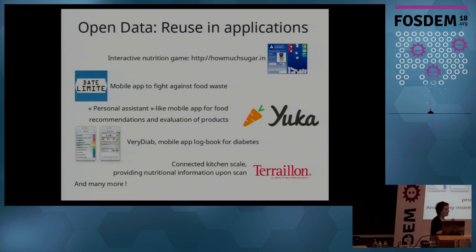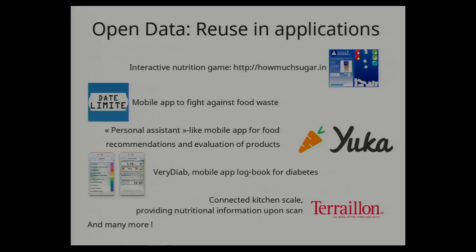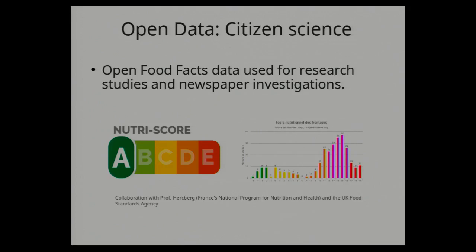Here are some examples of people who have done interesting things with the data. There's a game that proposes you guess how much sugar is in products. There's an application to help you track when your food will expire so you don't forget about it in the fridge. There's an application that acts as a personal assistant, telling you what you eat, what's good or not, and suggesting alternatives with less sugar. There's also an application to help people manage health conditions like diabetes, to control what they eat. And even a kitchen scale that uses data from the database to tell you more about the product you're weighing.